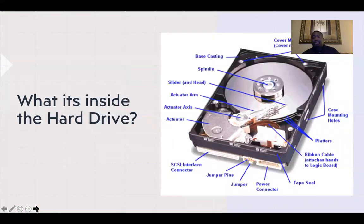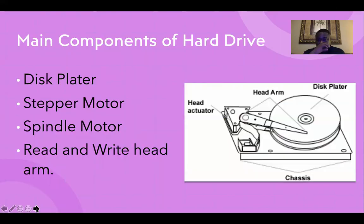This is a picture of the hard drive and this is how it looks inside. Each part plays a valuable role in the hard drive. The main components of the hard drive are: number one, the disc platter; two, the stepper motor; three, the spindle motor; and the read and write head arm.